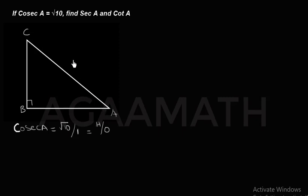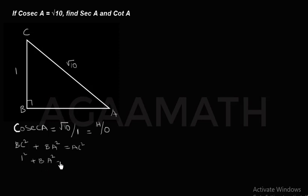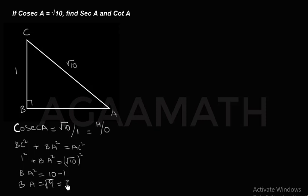The angle A is here, so hypotenuse AC is root 10 and opposite BC is 1. By the Pythagorean theorem: BA² + BC² = AC², so BA² = (root 10)² − 1² = 10 − 1 = 9, therefore BA = root 9 = 3 units.